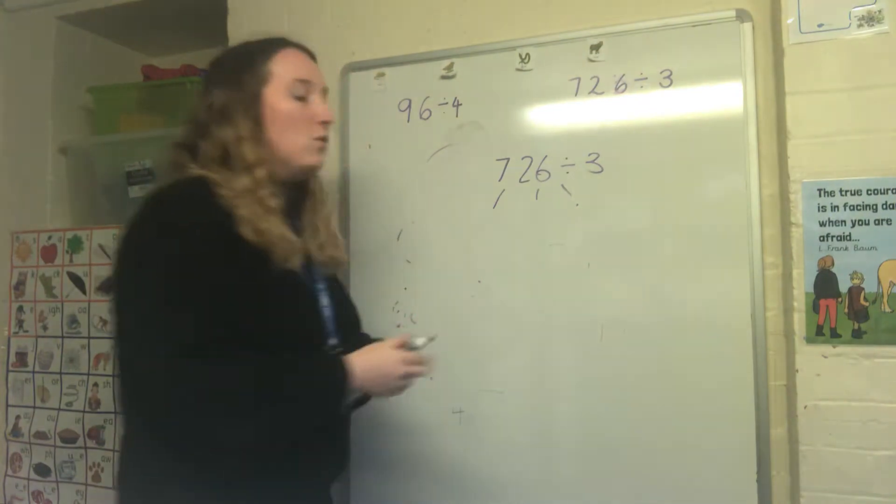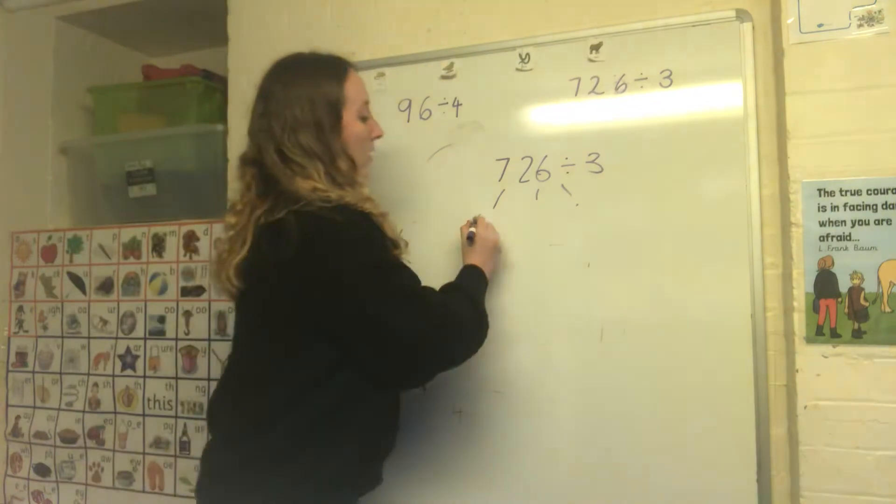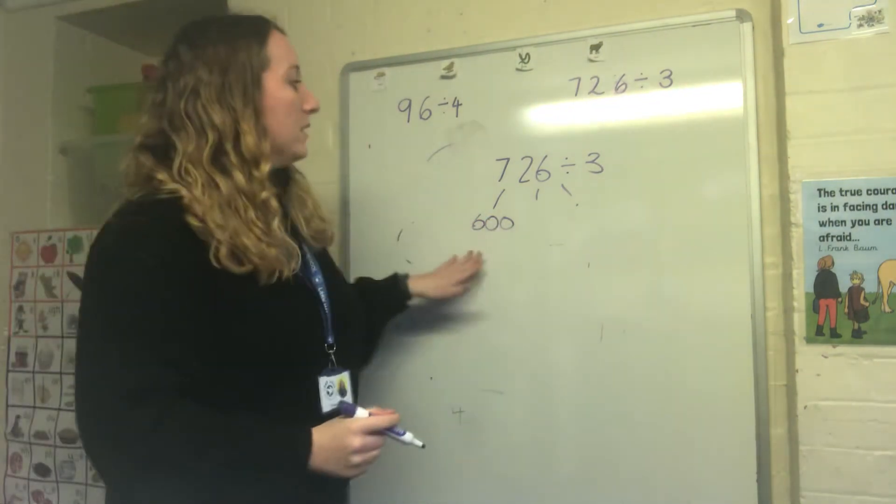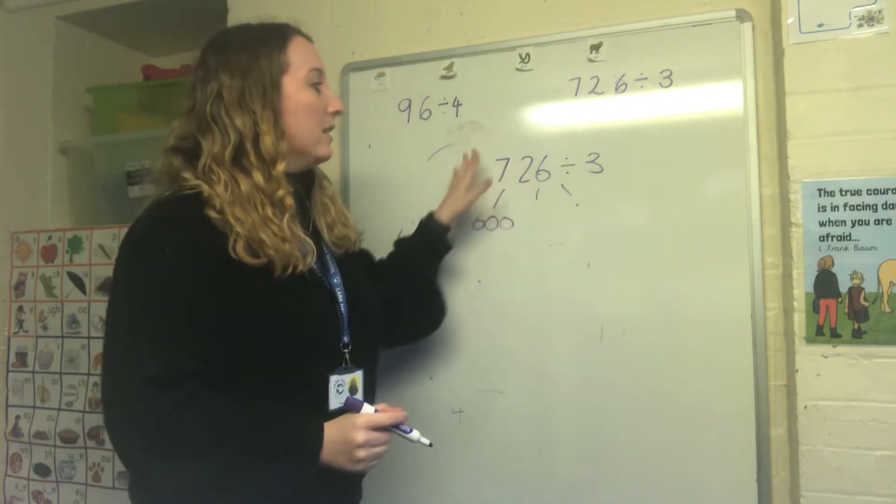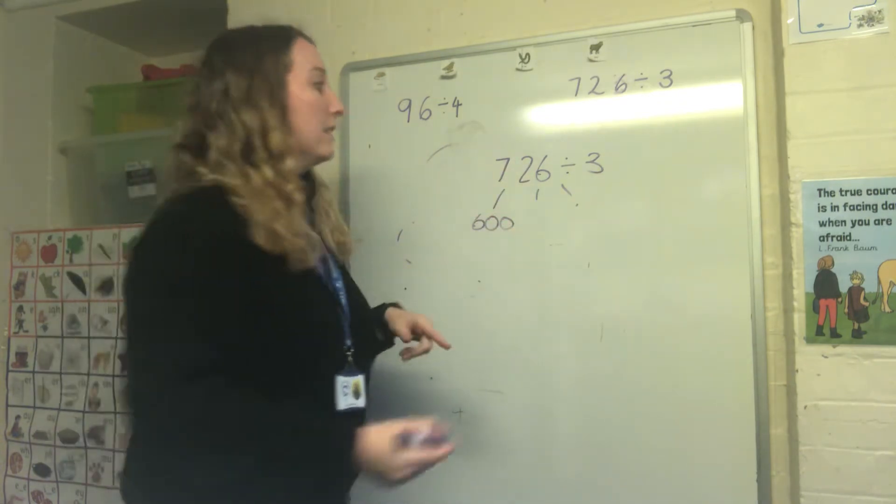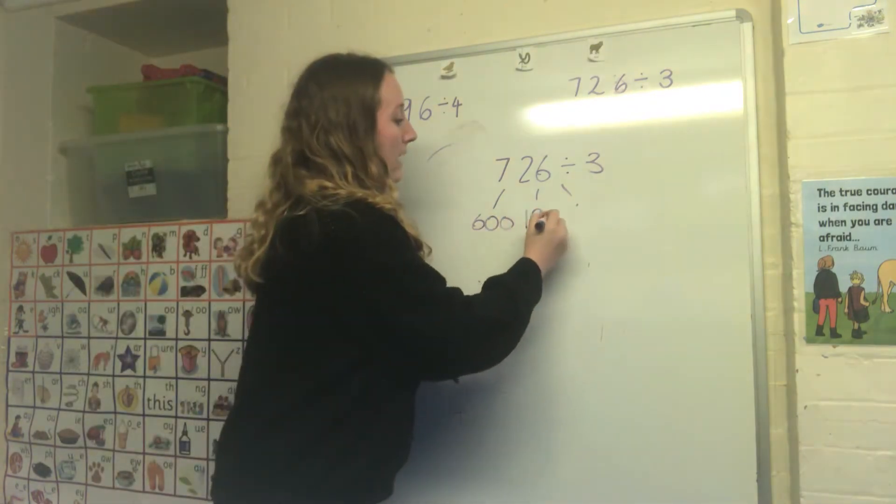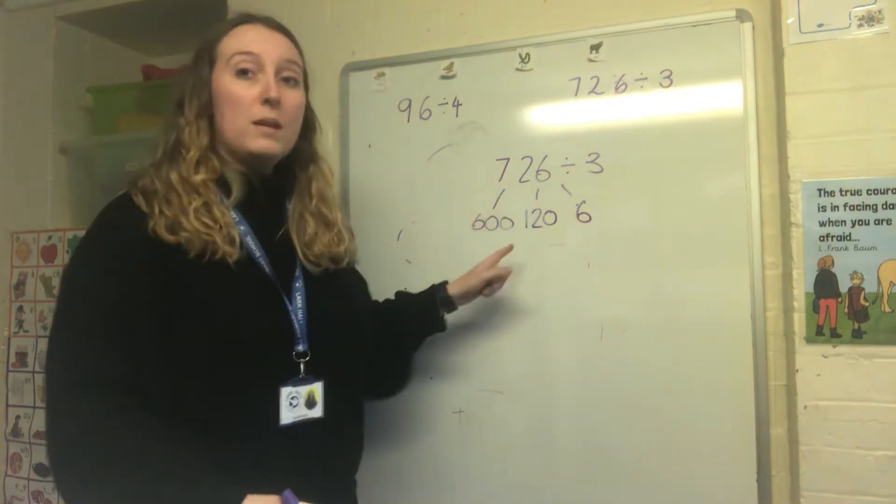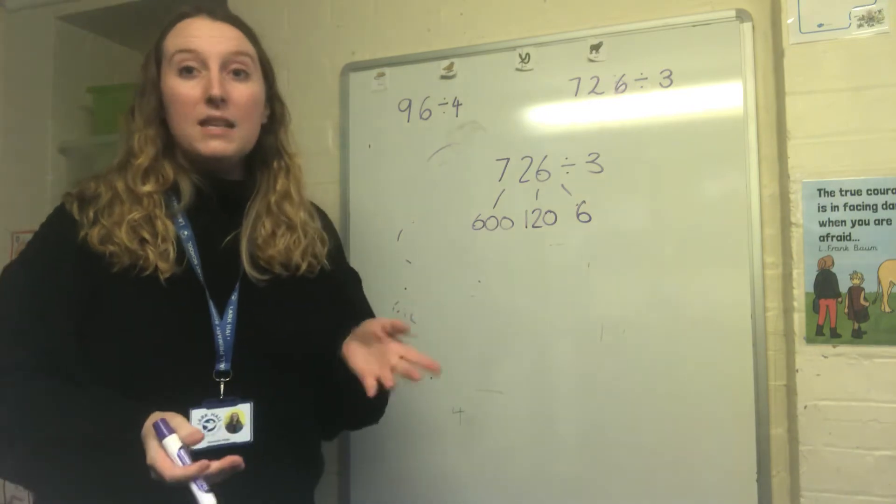But I do know that 6 is a multiple of 3 so 600 is a multiple of 3. So I'm thinking now I've only done 600 out of my 700. What do I need to add to make 726? So I'm going to use some tens and ones so I'm going to do 120 here and 6 here. So I partition the 720 part into 600 and 120 because they were easier to divide by 3. So now I can start dividing.